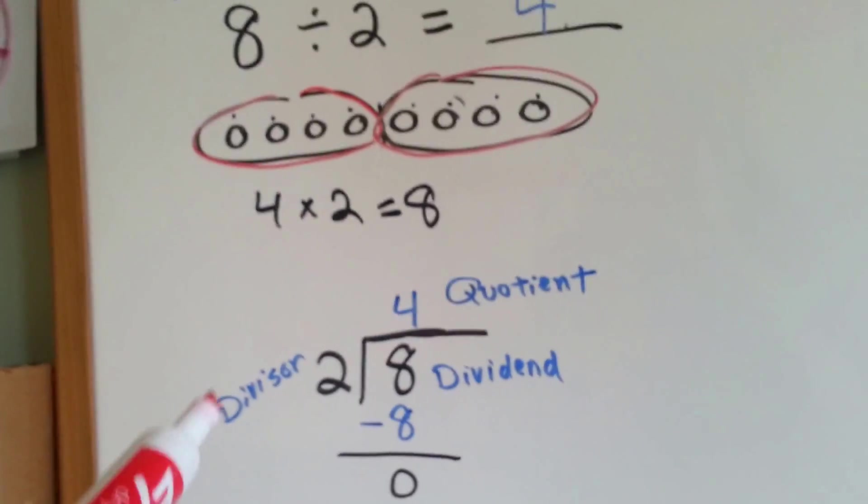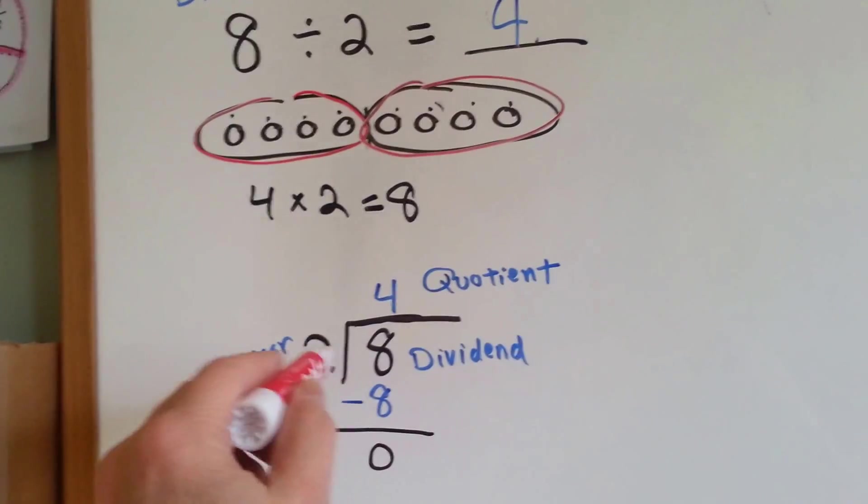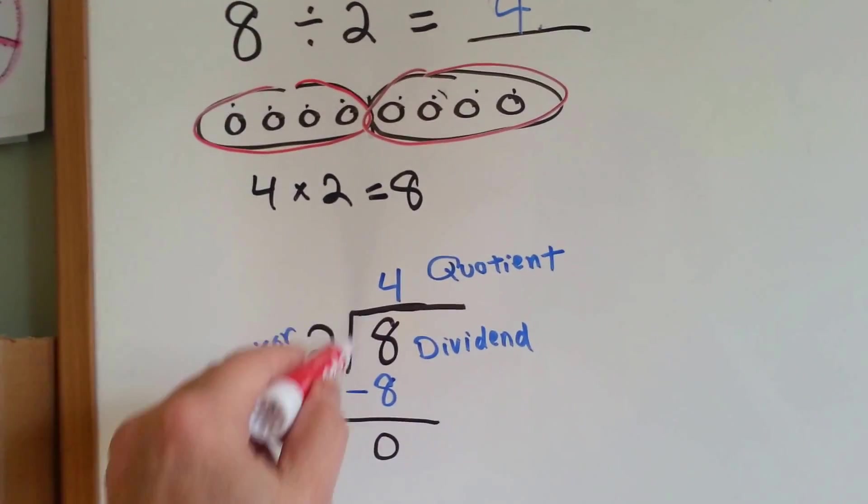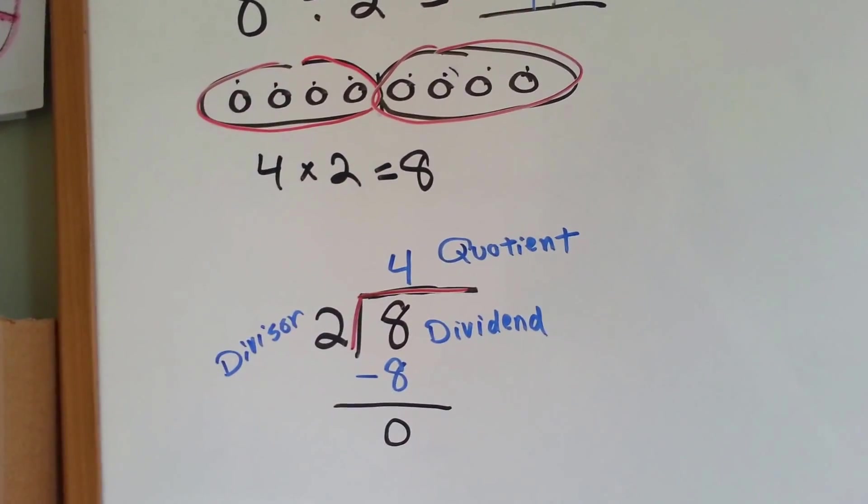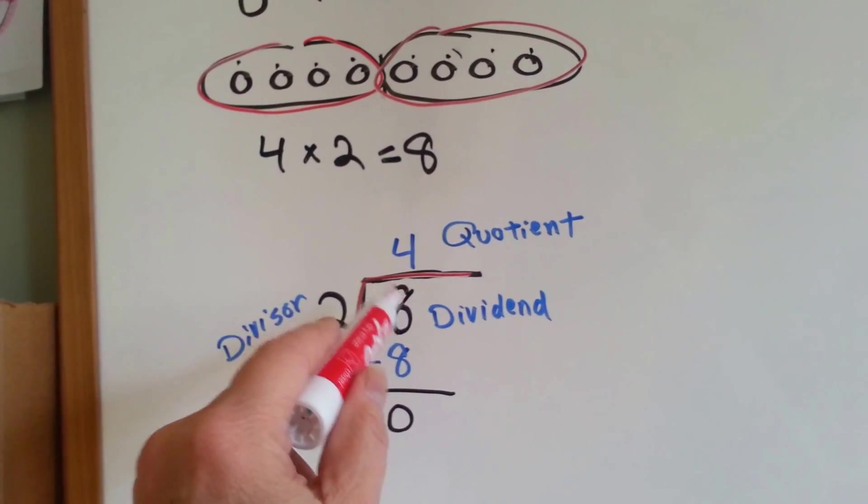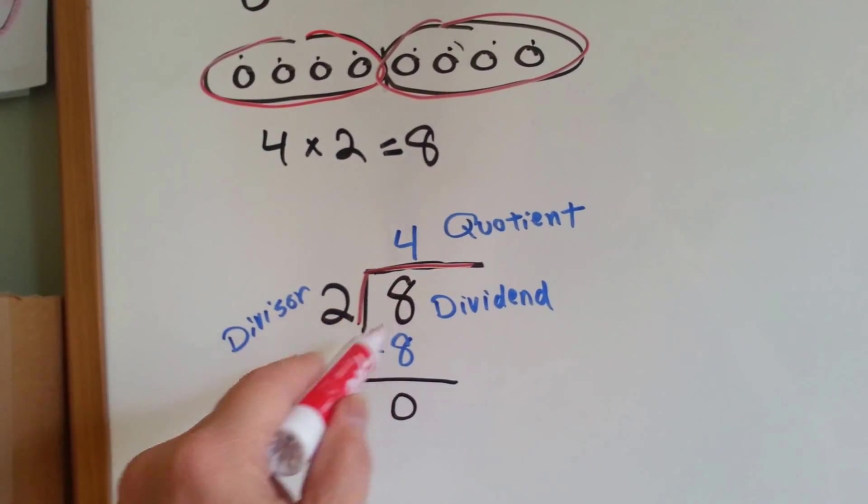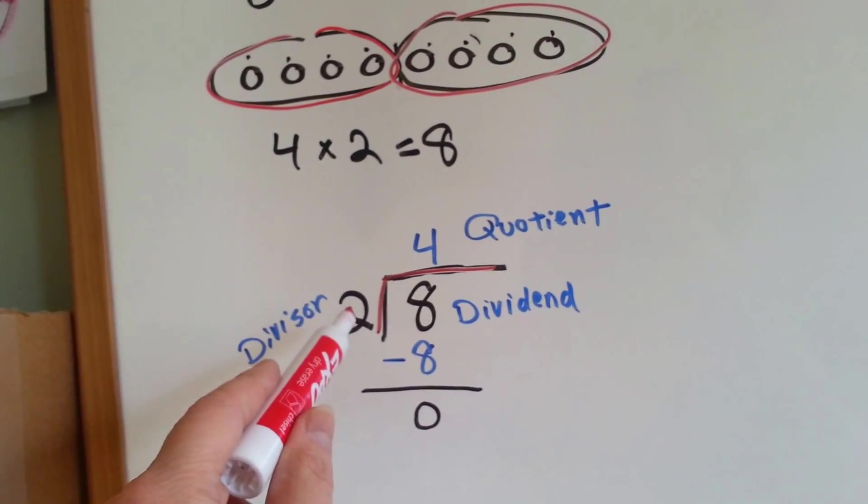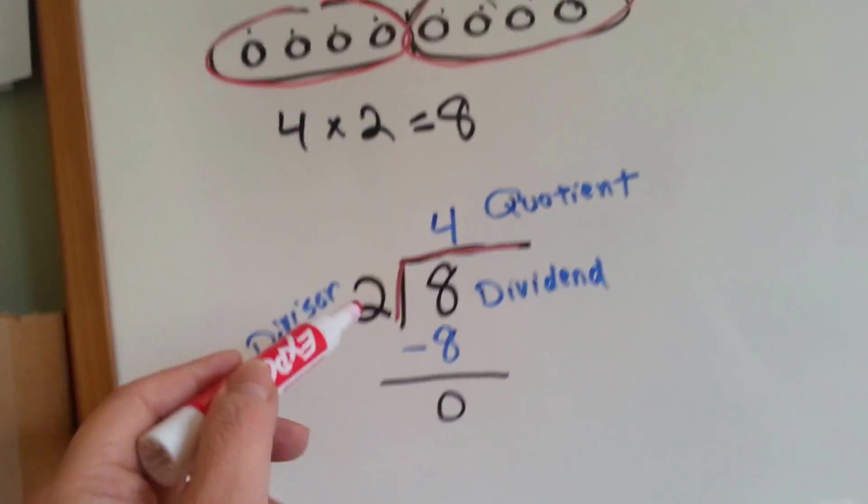So here's how we would write it in long division. We would use our sign, this bar sign right here. We put the big number, the dividend, on the inside. The number we're splitting it by, the divisor, goes on the outside here. And we ask ourselves, how many times can 2 fit into 8?